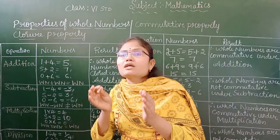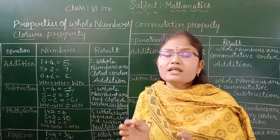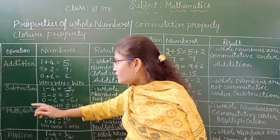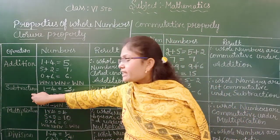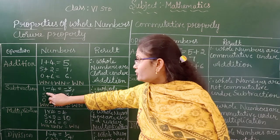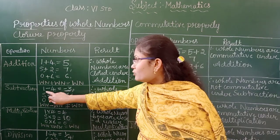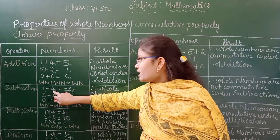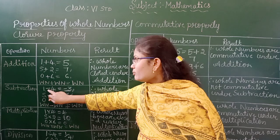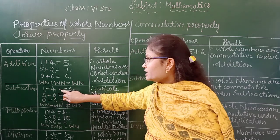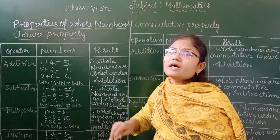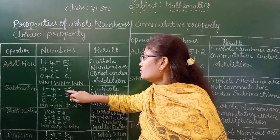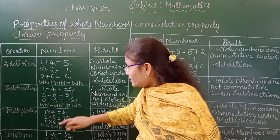Whole numbers are closed under addition. Now moving on to subtraction — if you subtract any two whole numbers, for example 1 minus 4, the result is minus 3.